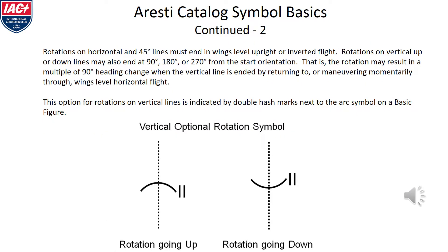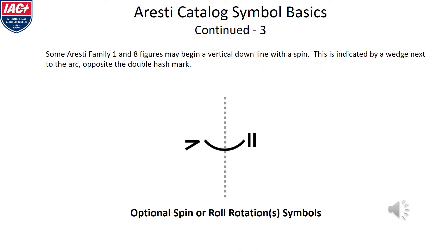Rotations on horizontal and 45-degree lines must end in wings-level upright or inverted flight. On vertical up or down lines, the rotations may also end at one of 90, 180, or 270 degrees of rotation from the start orientation. You will observe in the examples here that to show this, the arc indicating that an optional roll may be inserted has a double hash mark next to it. In Aresti families 1 and 8, there are figures that begin with a vertical down line, and that vertical down line may be flown with an optional roll. In addition, that vertical down line may begin as a spin. This is indicated by a wedge next to the roll arc that also will have a double hash mark next to it.